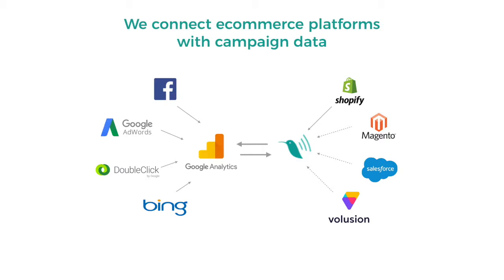Our platform brings together the campaign data that you already have in Google Analytics — whether your campaigns are coming from Facebook, AdWords, DoubleClick, other channels, or your own email lists. All of that information about what people are clicking on to come to your site and what they're doing on your site should be in Google Analytics. The problem is that by default you don't have good information about how that's linking to the sales on Shopify. Little Data pulls in that e-commerce data from Shopify when a customer makes a purchase and links it up with the campaign data that brought them there.